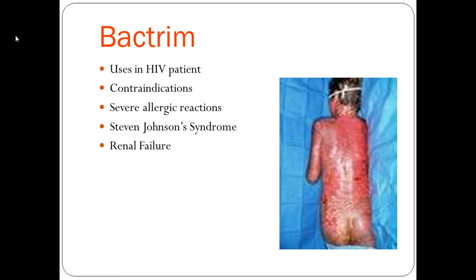Although Bactrim is not part of the HAART profile, we use it for two reasons in HIV-positive patients: to treat PCP pneumonia, and once a week to prevent upper respiratory infections and urinary tract infections. It is contraindicated in patients with renal insufficiency, those who are breastfeeding, or pregnant. Severe allergic reactions to Bactrim can include Red Man Syndrome (10% of body), Stevens-Johnson Syndrome (20% of body), and TENS — Toxic Epidermal Necrolysis Syndrome (over 30% of body) — which are essentially chemical burns of the skin layers. These reactions can also be seen with vancomycin and gentamicin.